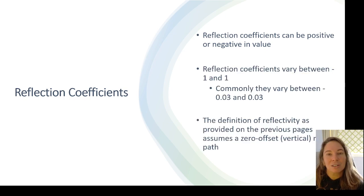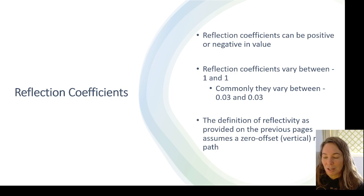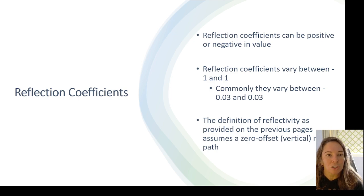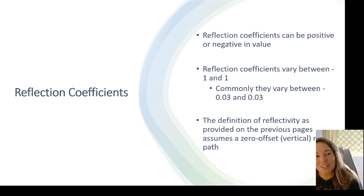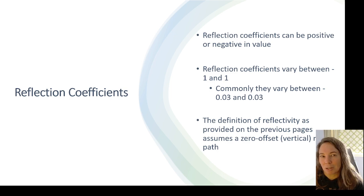Just a few reminders: these reflection coefficients can be positive or negative in value, and that'll flip the direction of our wave from a peak to a trough depending on the reflection coefficient. Theoretically they vary from negative one to positive one, but commonly in the seismic data we're seeing around negative 0.03 to positive 0.03.